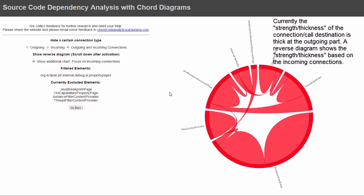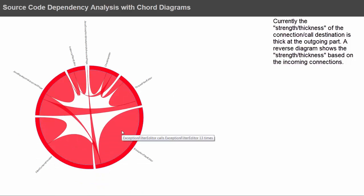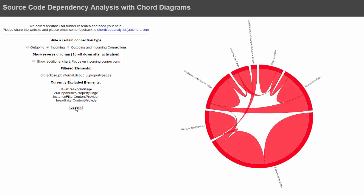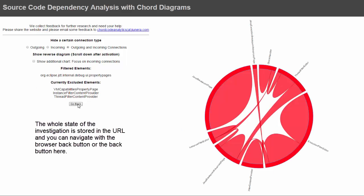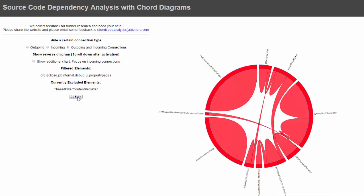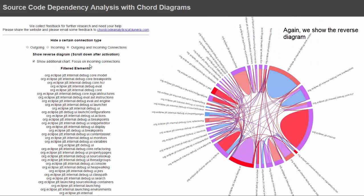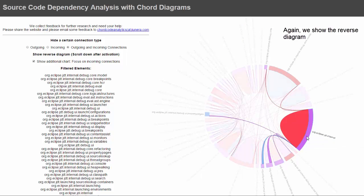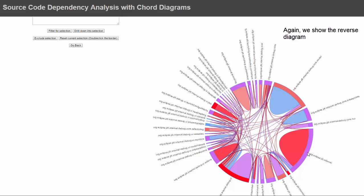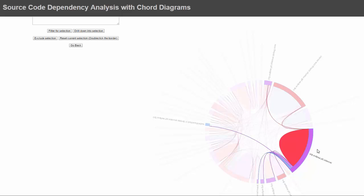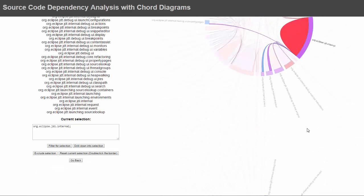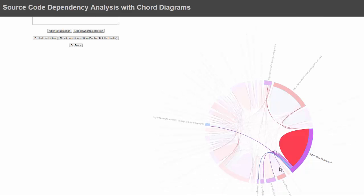Right now, the thickness of the lines from one class or package component to another is based on the outgoing connection strength, not the incoming connection strength. There is also a back functionality where you can step back through your history using the normal back button in the browser. The whole state of the diagram is always saved in the URL, so you can copy and paste the URL and send it to a friend. With the reverse diagram, the thickness of the line is based on the incoming connections, not the outgoing connections.